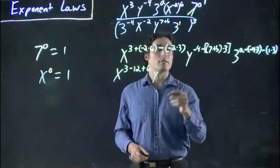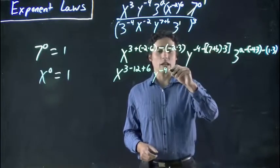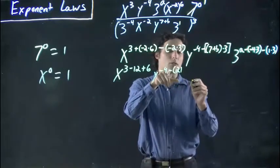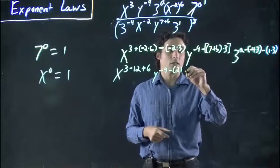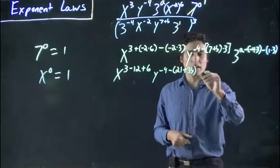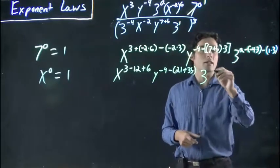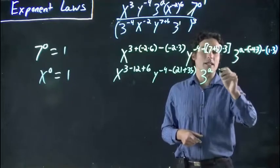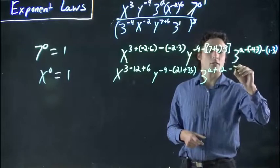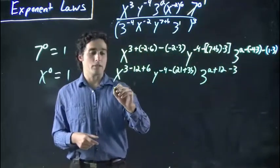Same thing with y, we've got minus 4, and then 3 times this, so we're going to have minus 21, and I'm leaving the bracket because I'm going to have to multiply this minus into everything after, plus 3b. So showing a few extra steps is probably a good idea. Then 3, the same thing here, a, and then a minus and a minus becomes a plus, so plus 12, and minus 3.